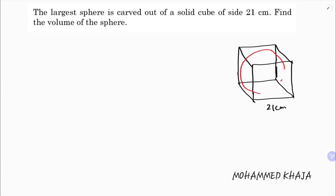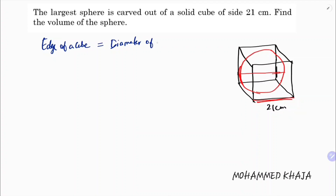The edge of a cube will be the diameter of a sphere. So the edge of a cube is 21, so the diameter is 21, and the radius will be 21 by 2.